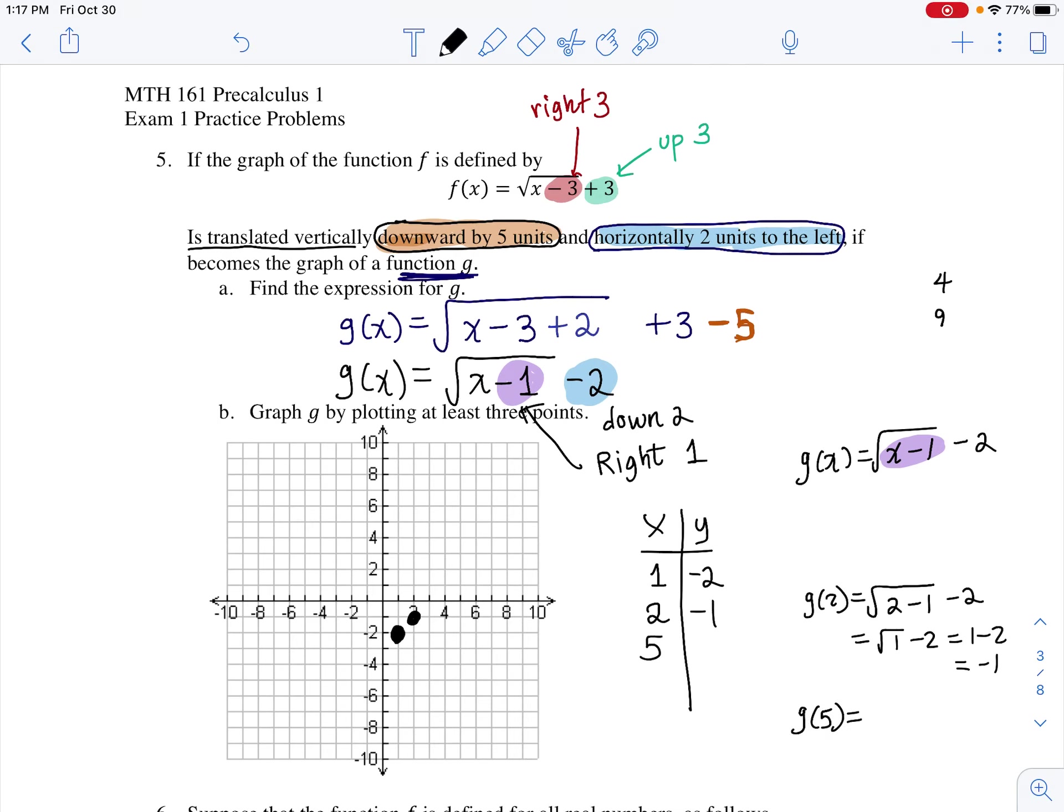If I plug in five, g(5) will get five minus one minus two. That's going to be square root of four minus two, that is two minus two, therefore zero. So if you plug in five into the function you will get zero. So five to the right, zero up. That is enough points.